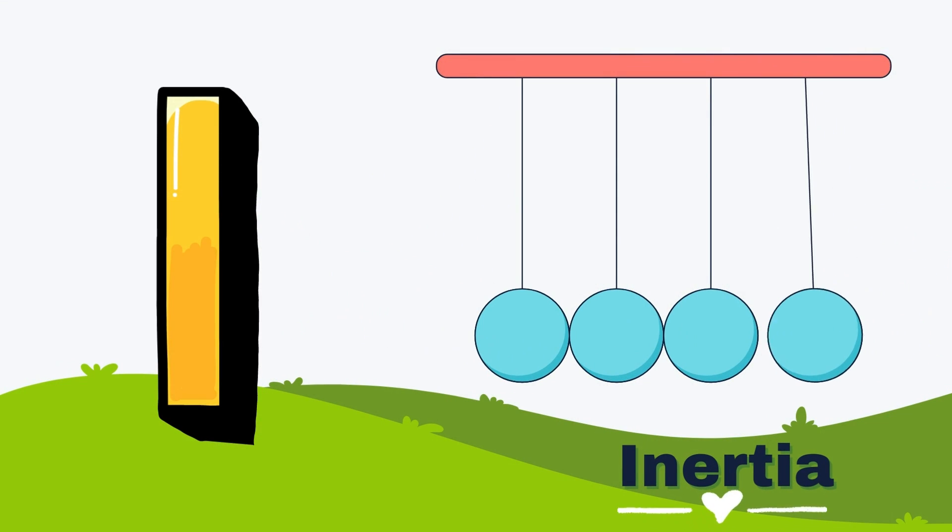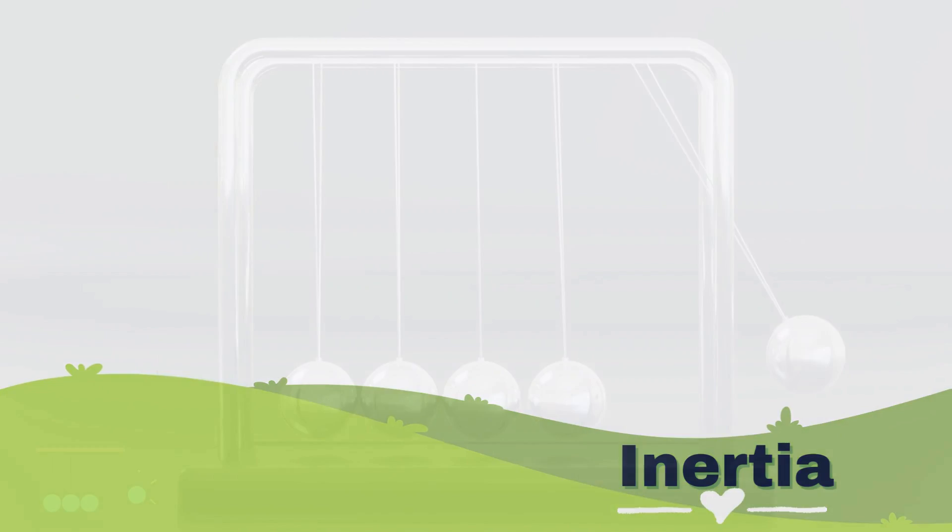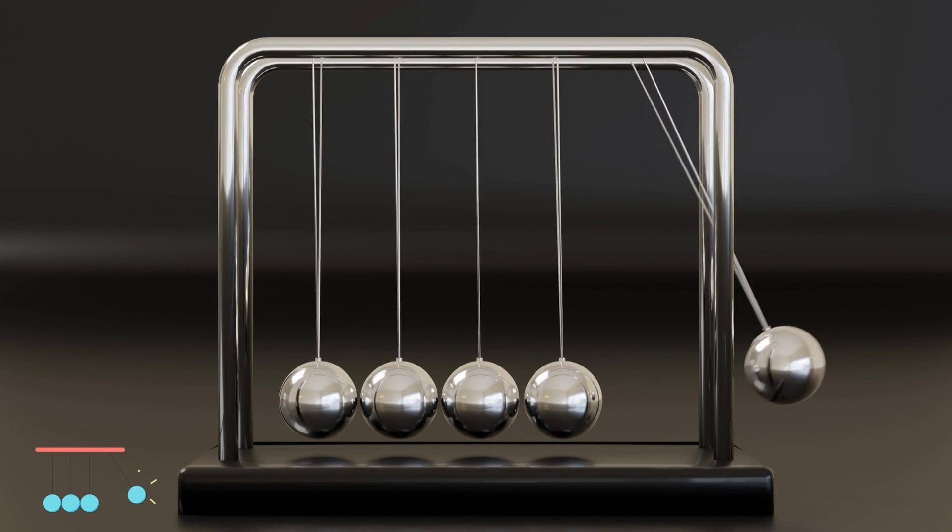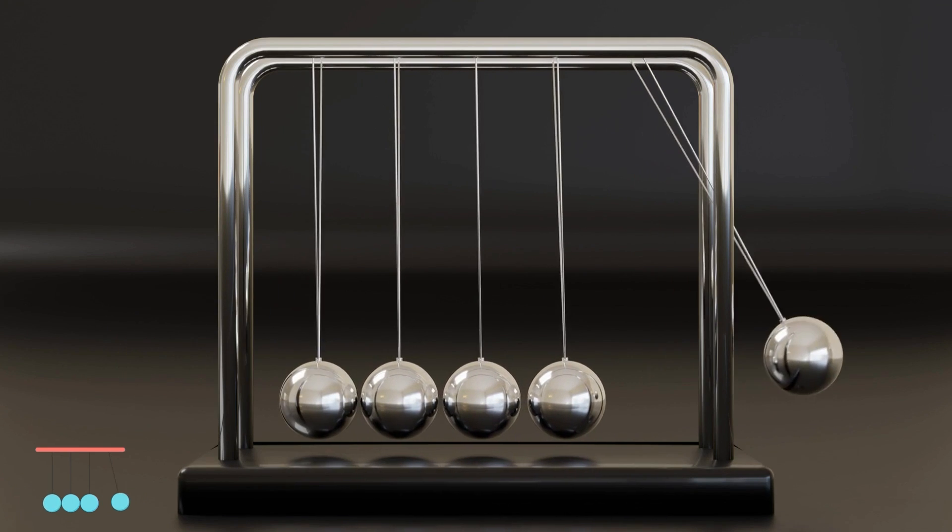I for Inertia. Inertia, a force of rest or motion. Objects keep going, unless there's commotion. Things at rest stay put, or keep moving along. Inertia keeps us steady, or helps us move strong.